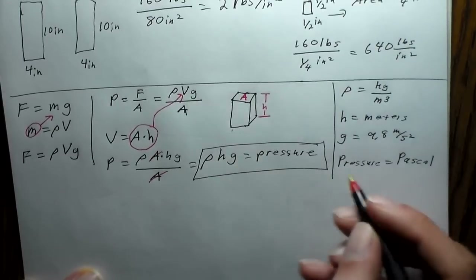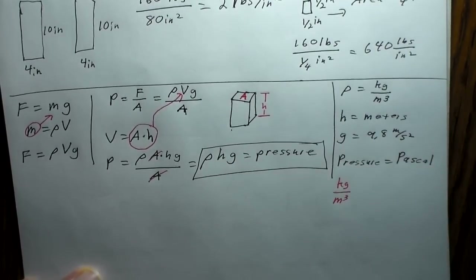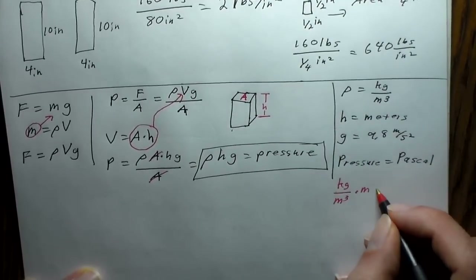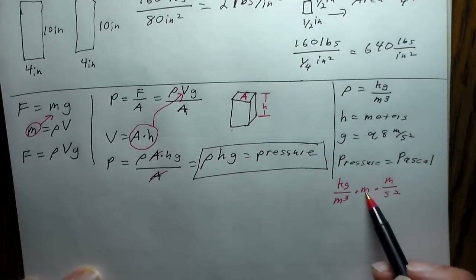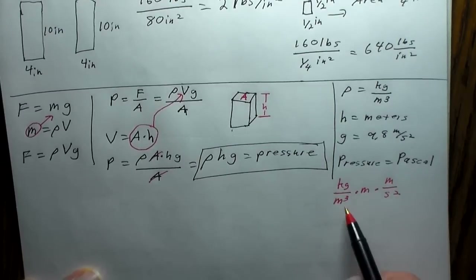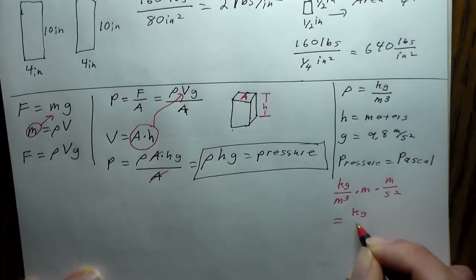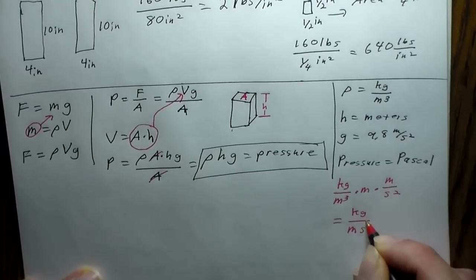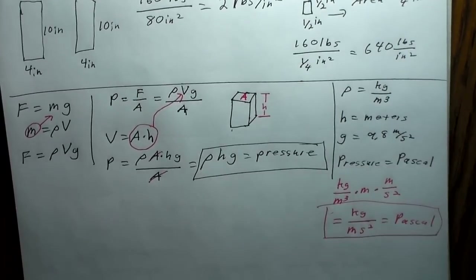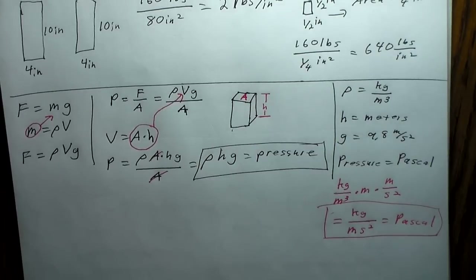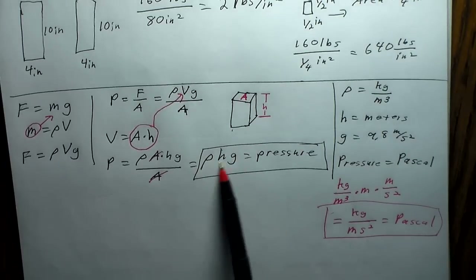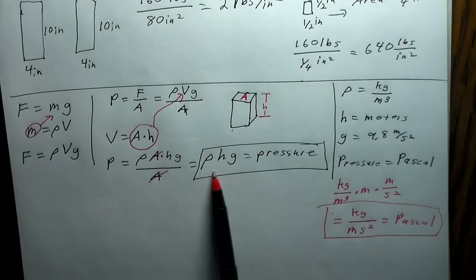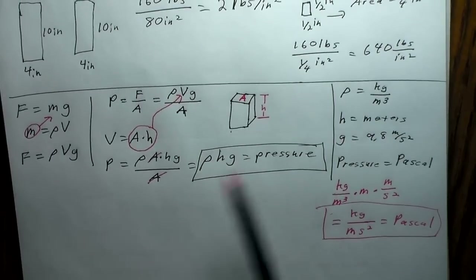A Pascal is also equivalent to newtons per square meter. As long as you make sure your values are in the correct SI units when doing these calculations, your pressure will come out in Pascals. We'll come back to this shortly, but first let's describe how a barometer actually works, and then figure out what one atmosphere of pressure is in Pascals.